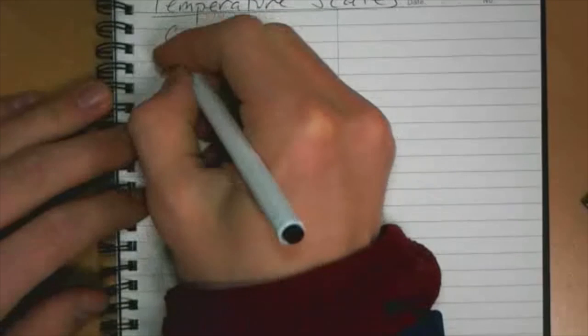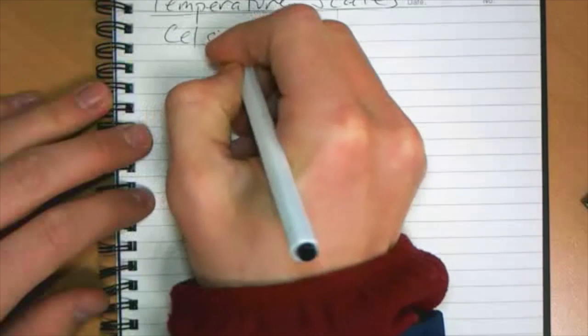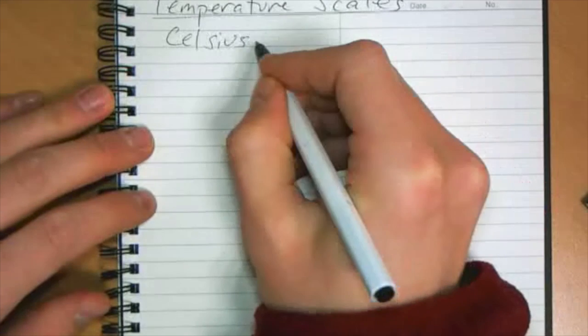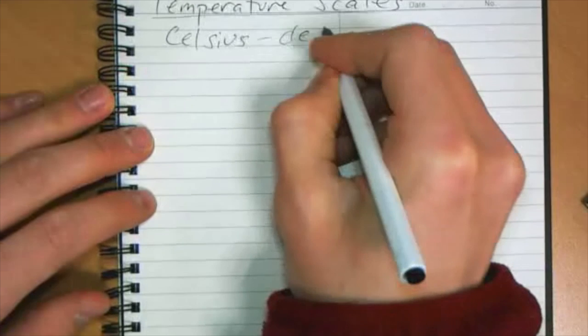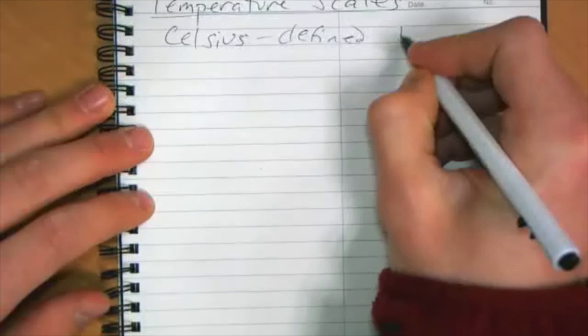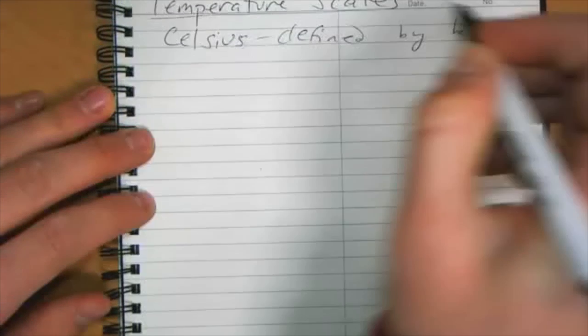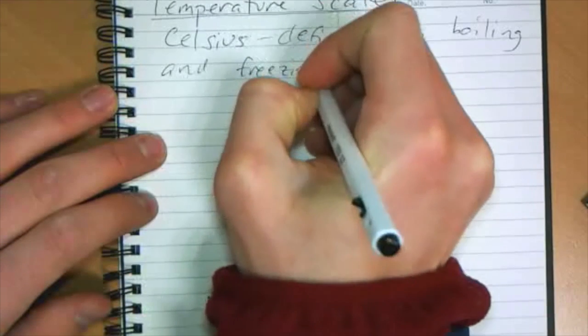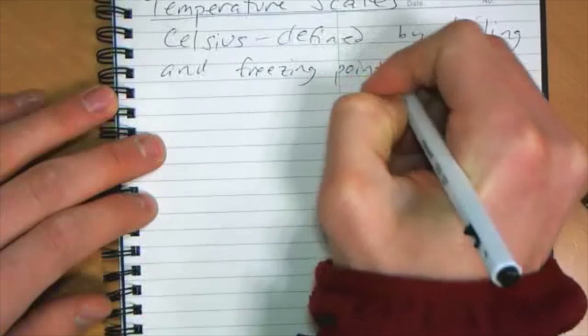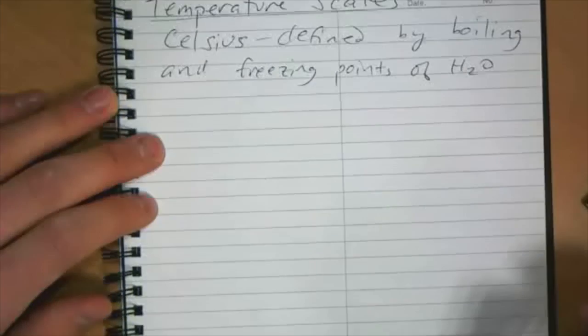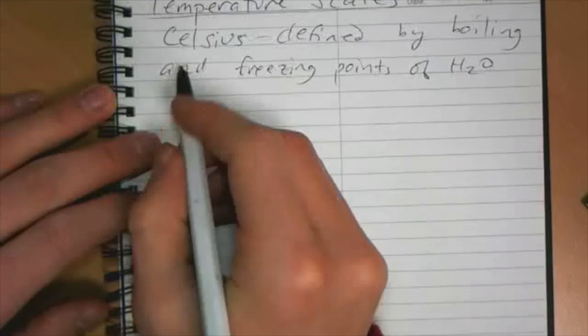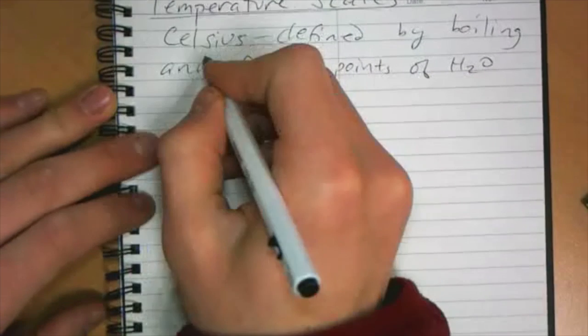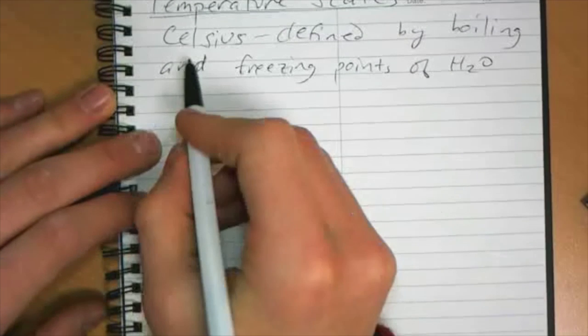There are a few different temperature scales that are used throughout the world. The most commonly used is the Celsius scale. Celsius was originally defined by the boiling and freezing points of water, which is a very sensible way to define temperature because water is very common and very important to life on our Earth.